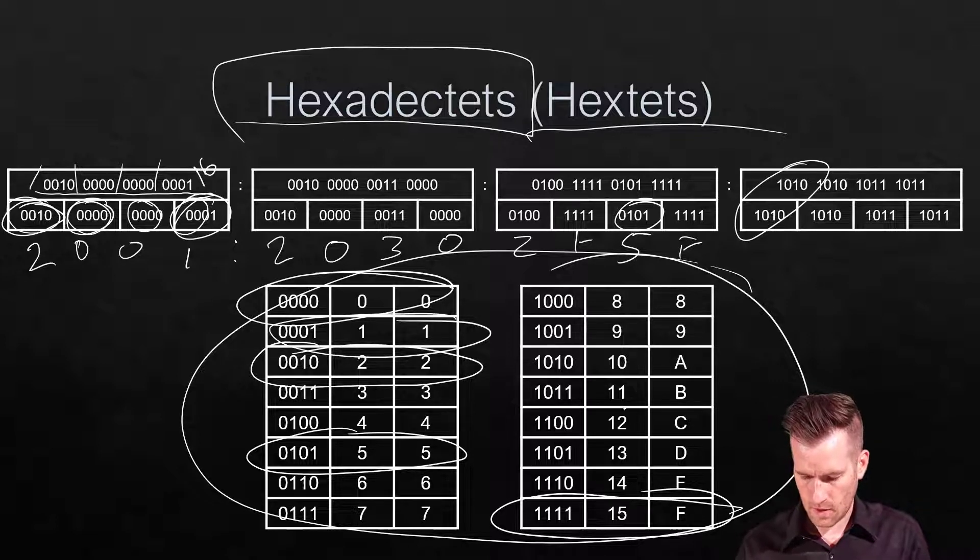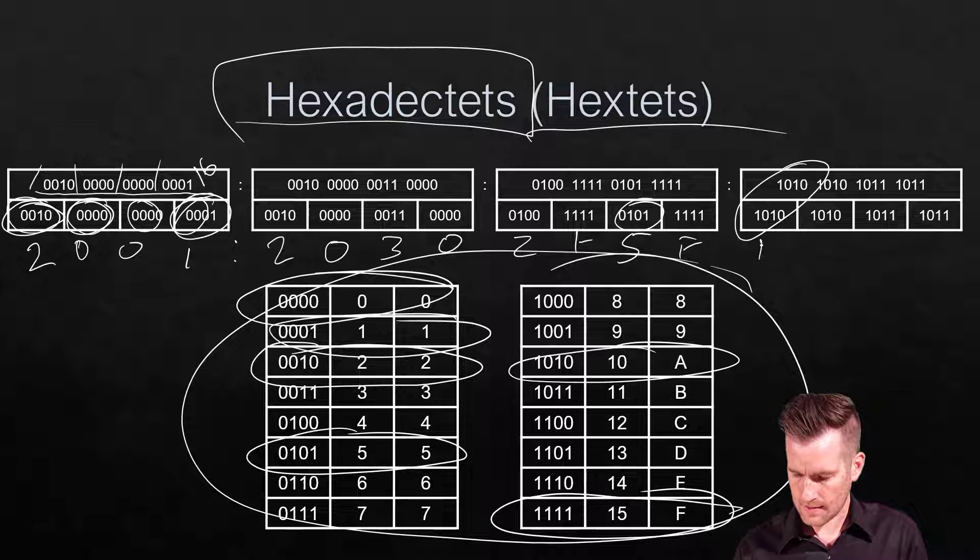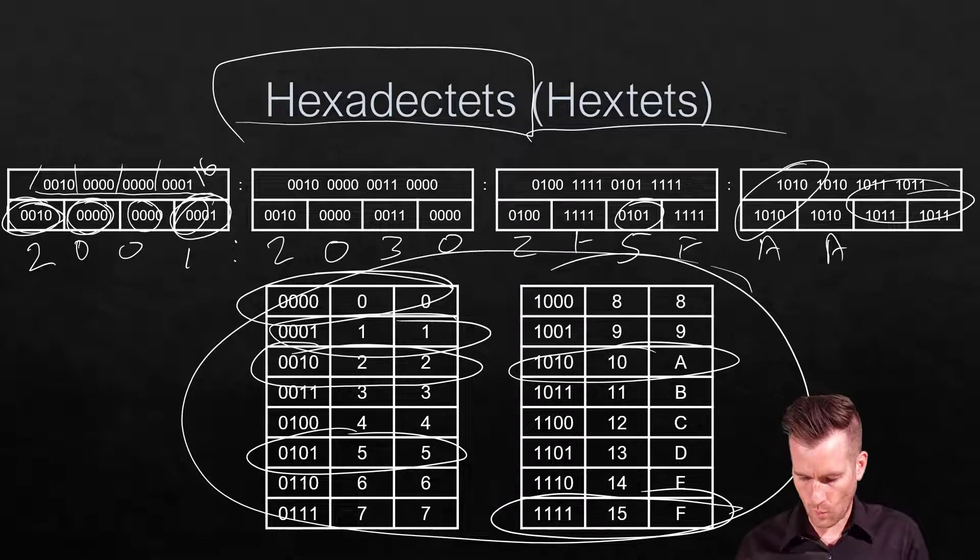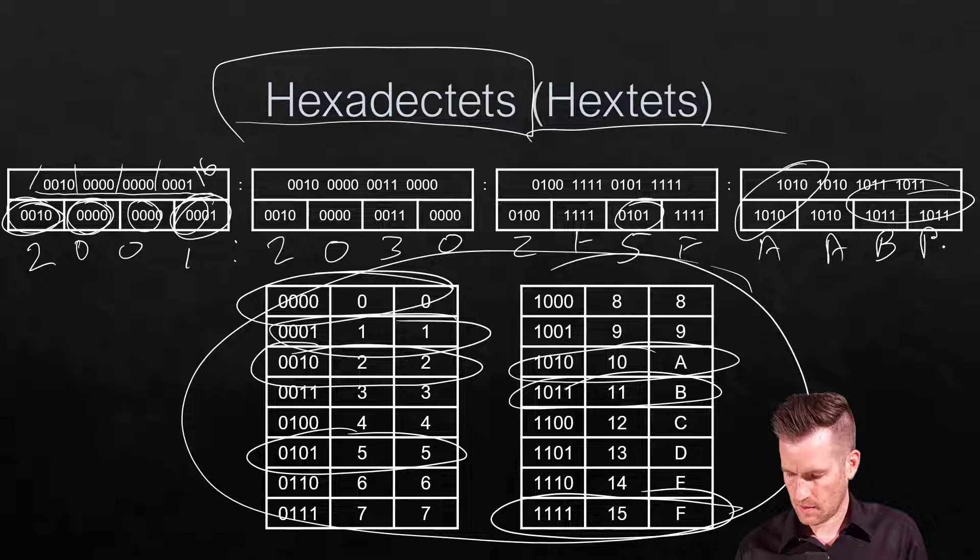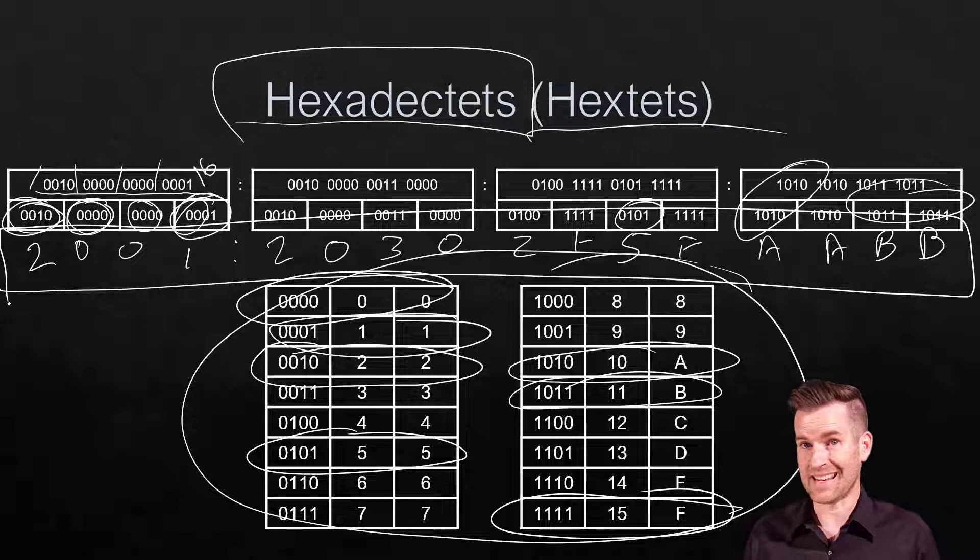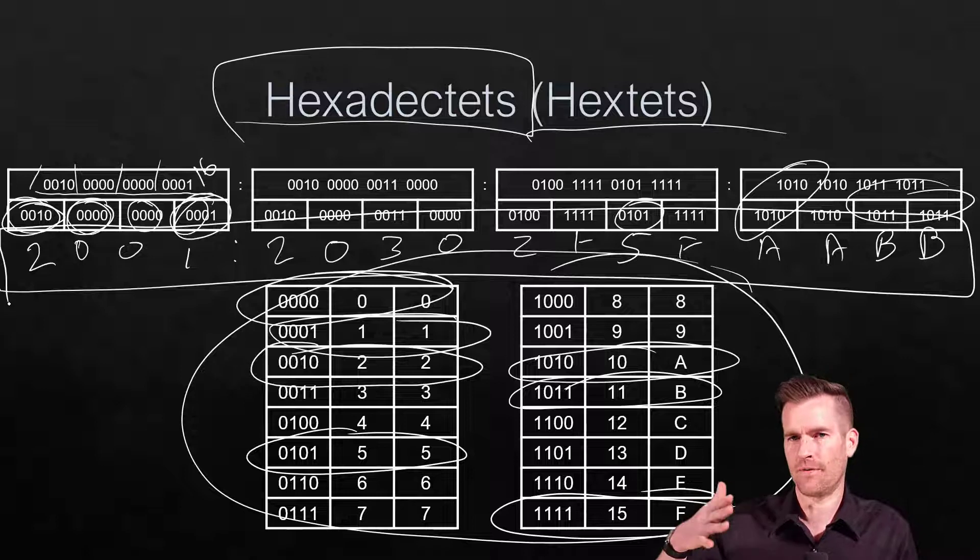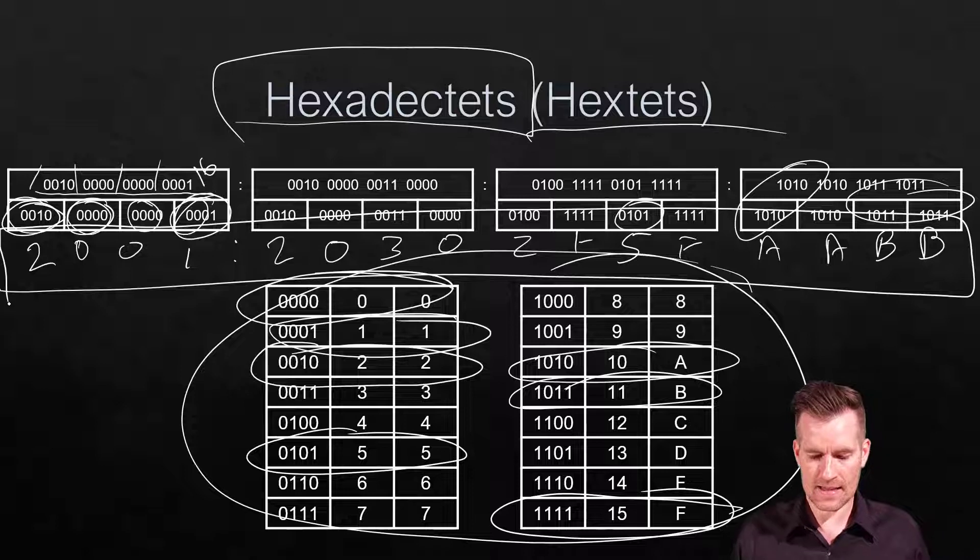So that's A. Then 1011 is B. This represents the first 64 bits. We'd have to do this for the following 64 bits to figure out the complete address. This is how you translate bits to the hexadecimal form.